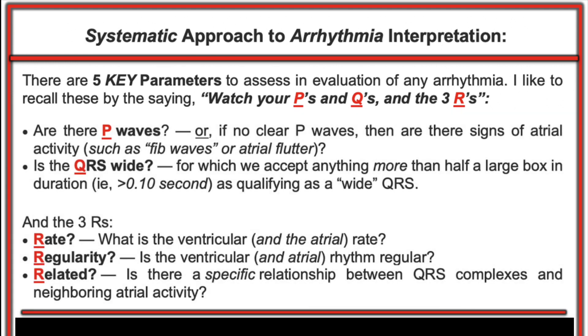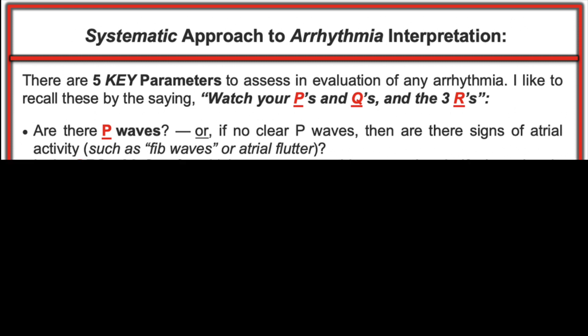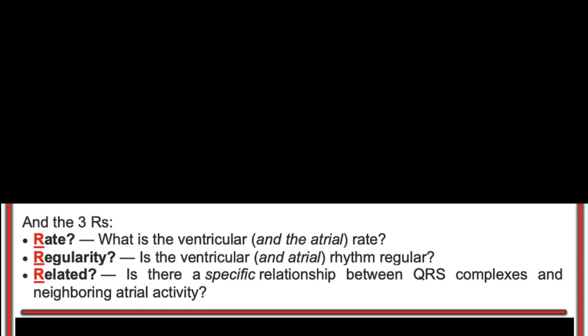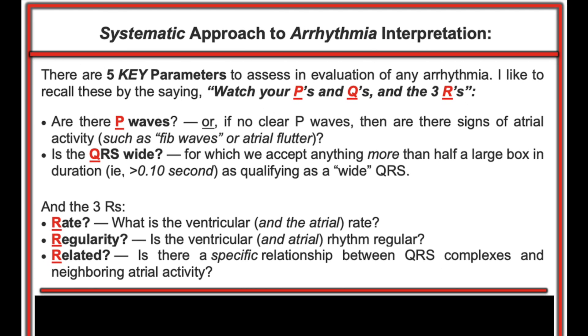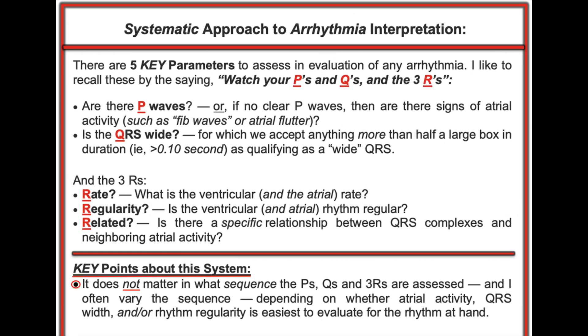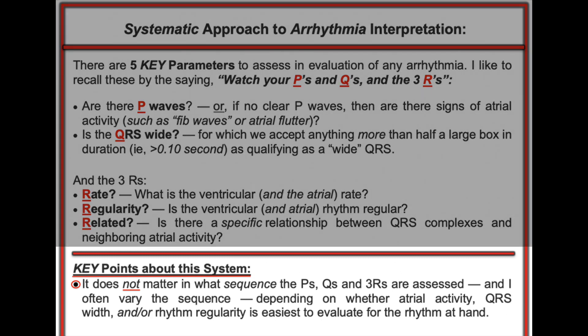For fast rhythms and slow rhythms, you're looking for P waves or atrial activity — is the QRS wide or narrow? The three R's are the rate of the rhythm, both atrial and ventricular, the regularity, and if there are P waves, are they related to the QRS complex? It doesn't matter in what sequence you ask yourself these questions, as long as you always assess all five parameters.